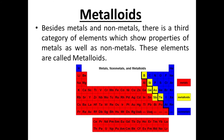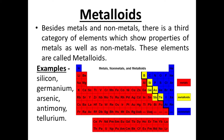Besides metals and non-metals, there is a third category of elements which show properties of metals as well as non-metals. These elements are called metalloids. For example, silicon, germanium, arsenic, antimony, tellurium. If you look at the periodic table, the elements shown in yellow color are examples of metalloids.